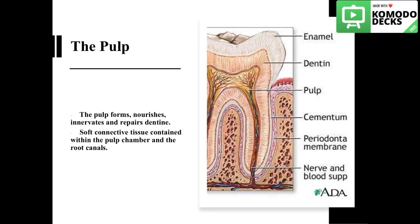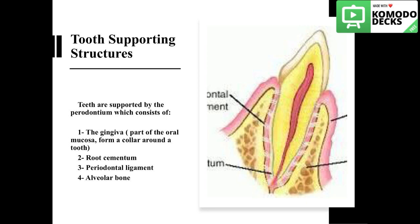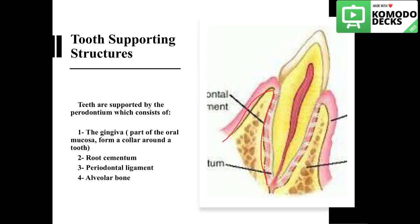The pulp is the soft connective tissue inside the tooth that nourishes, innervates, and repairs dentine. It is contained in both the crown and the root. The tooth supporting structure, called the periodontium, consists of four components: the gingiva, which is the part of the mucosa that forms a collar around the tooth; the root cementum, which covers the dentine of the root; the periodontal ligament, which binds the cementum to the alveolar bone; and the alveolar bone itself, represented by white fibers in the figure.